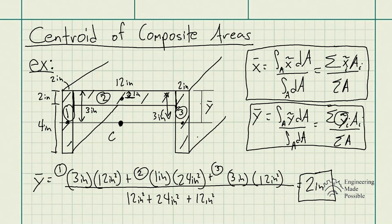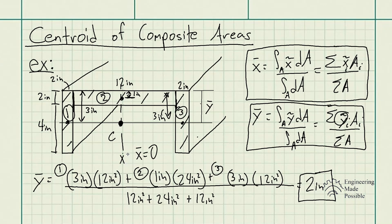This is how you solve the centroid of composite areas. Whenever you have a cross-sectional area composed of multiple simpler geometries, you can use these simplified formulas. Instead of using integrals, you use the sum of the centroids of each simpler geometry times its area, divided by the sum of areas. By inspection, when it comes to the centroid with respect to the X-axis, since the shape is symmetric, X-bar equals zero with respect to this axis. You could tell just by the geometry since it's symmetric — you could go ahead and do the calculations for X-bar to verify that.